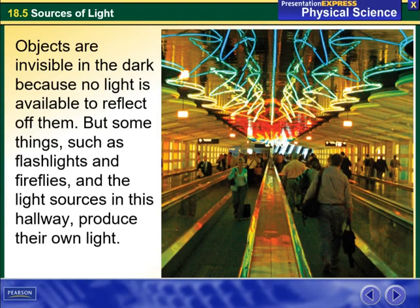Hello my dear students and welcome to this week's overview. During this week we'll be talking about sources of light. Objects are invisible in the dark because no light is available to reflect off them, but some things such as flashlights and fireflies and the light sources in this hallway produce their own light.